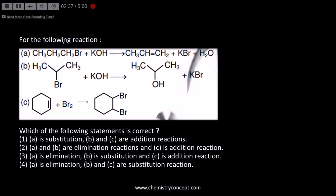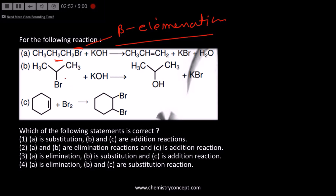The first reaction shown is an elimination reaction — a Br and a hydrogen are removed; it is a beta elimination reaction. The next is an addition reaction where bromine is added to the double-bonded carbon. So the correct option is 3: A is elimination, B is substitution, and C is addition reaction.